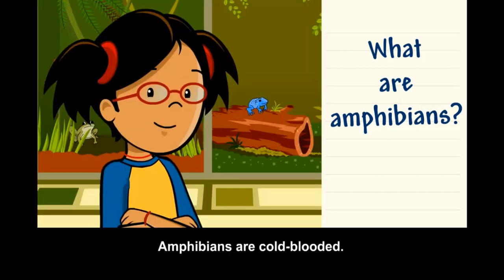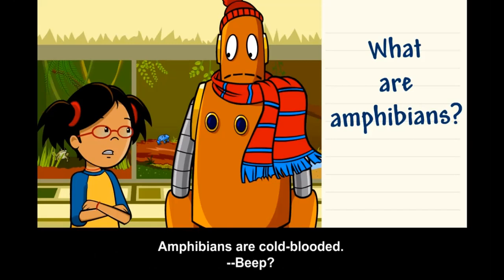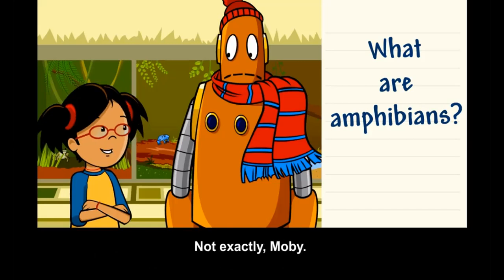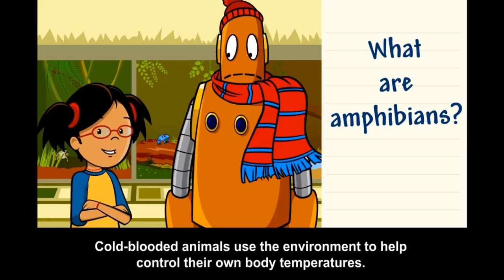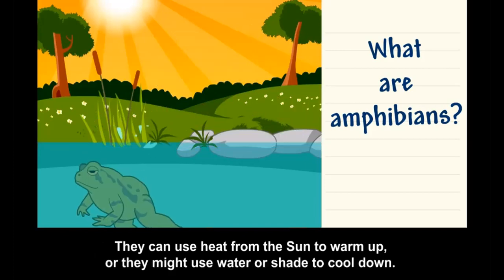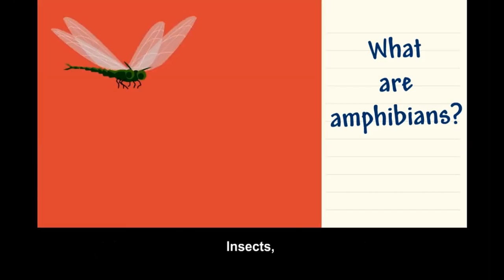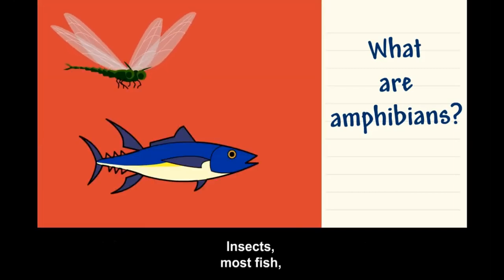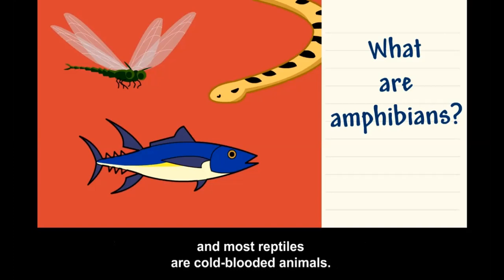Amphibians are cold-blooded. Cold-blooded animals use the environment to help control their own body temperatures — they can use heat from the sun to warm up, or they might use water or shade to cool down. Insects, most fish, and most reptiles are also cold-blooded animals.